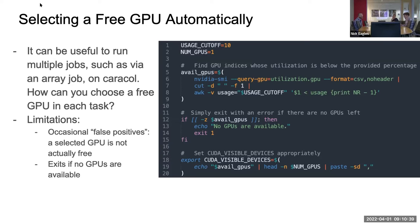It's useful to do this interactively, but often you might run into situations where you want to run multiple jobs, such as an array job, and it would be really inconvenient without an automated way to select a GPU. I have some experimental code on the right screenshot that basically does what we just did in the last slide but in a more automated way, using the nvidia-smi command.